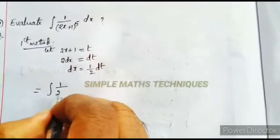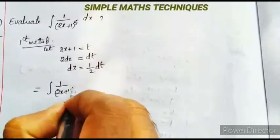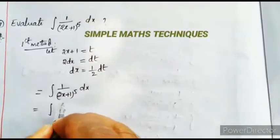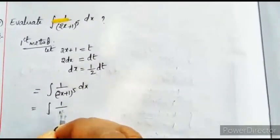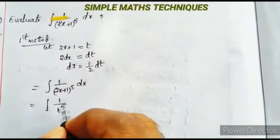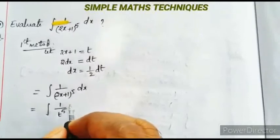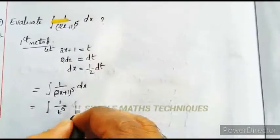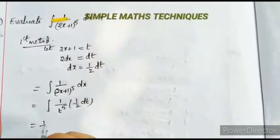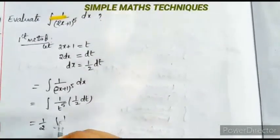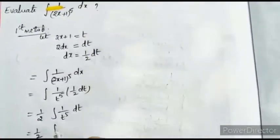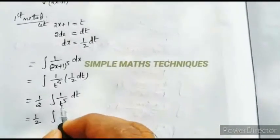Now dx equals 1/2 dt. So the integration of 1 by (2x+1)⁵ dx can be written as integration of 1 by t⁵ into (1/2) dt. That equals 1/2 into integration of 1 by t⁵ dt.